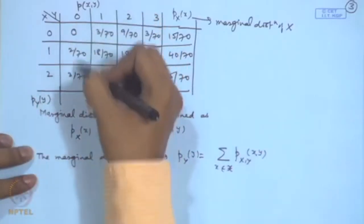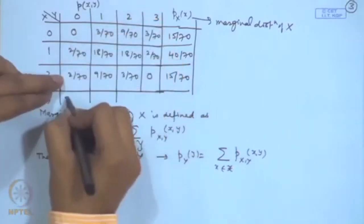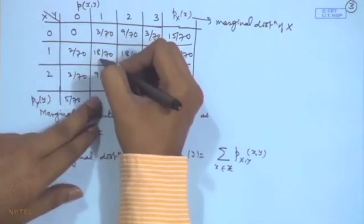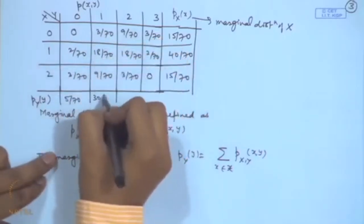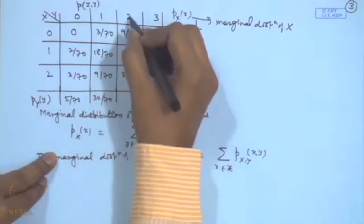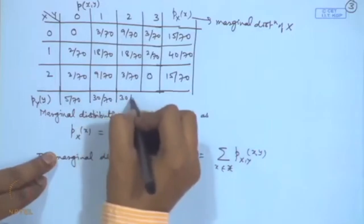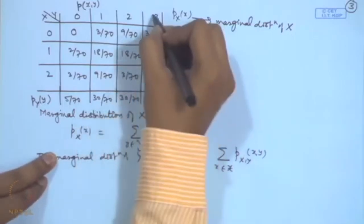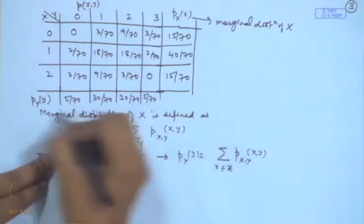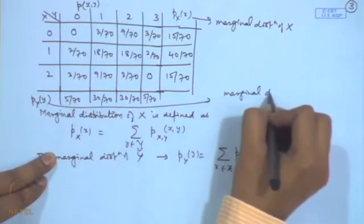If we add with respect to X we get the marginal distribution of Y. Adding the first column gives P(Y=0) = 5/70; the second column gives P(Y=1) = 30/70; the column for Y=2 gives 30/70; and the column for Y=3 gives 5/70. This gives the marginal distribution of Y.